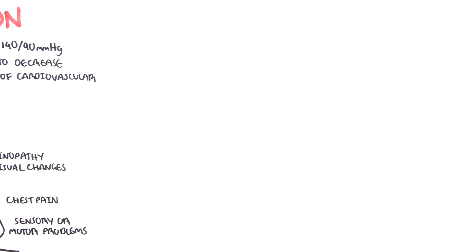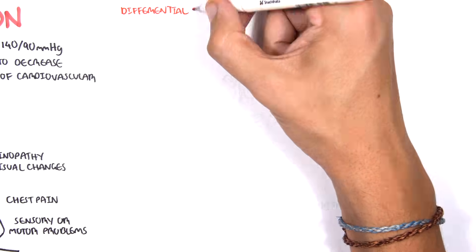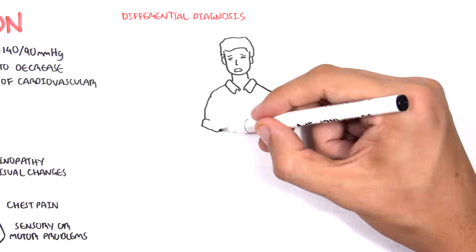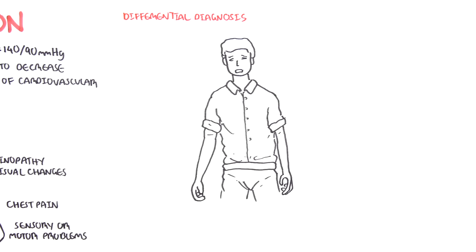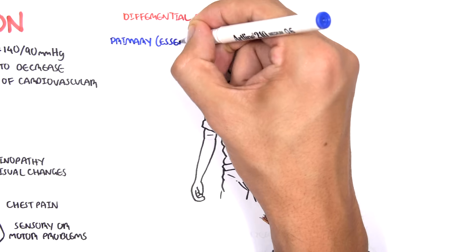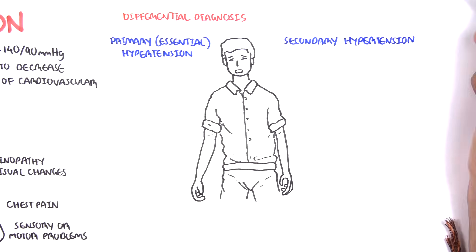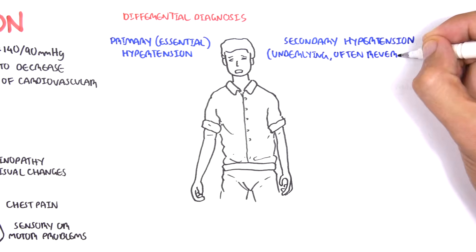Hypertension can be a disease in itself or it can be secondary to another condition — an underlying disease. Hypertension can be categorized as primary, also known as essential hypertension, or secondary hypertension, which is hypertension as a result of an underlying, often reversible cause.